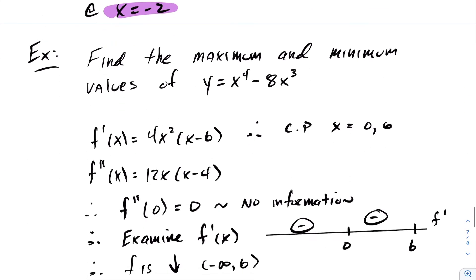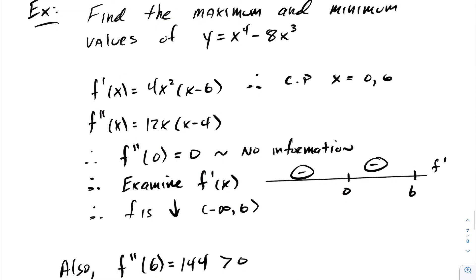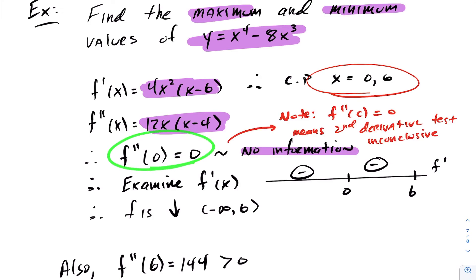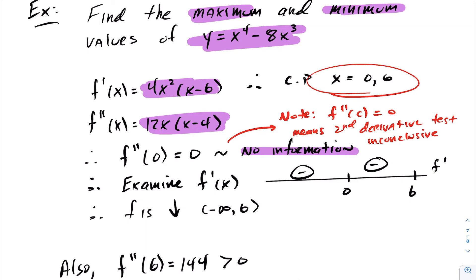Let's take a look at the next example. We want to find all maximum and minimum values of the following function. f prime at x is 4x squared times x minus 6, and the critical points for this question will be 0 and 6. Notice I took f double prime at 0 and I got 0. Because of this, your second derivative test has failed. This happens only when f double prime at your critical point is 0, since it wasn't greater than 0 or less than 0.